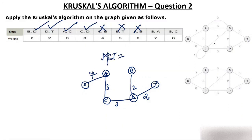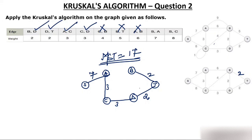The weight of this MST is 2 + 2 + 3 + 3 + 7 = 17. Suppose you had selected BT first instead of BD — in that case, you would not select BD, but the MST weight would still be 17. The shape can be different, but the weight remains the same — if it's 17, it's always 17 for the minimum spanning tree. In the next video, the seventh video, we will discuss Kruskal's algorithm formally.